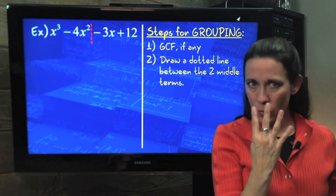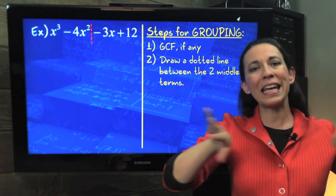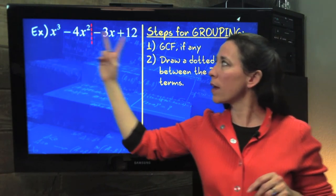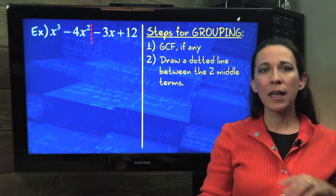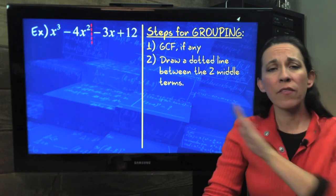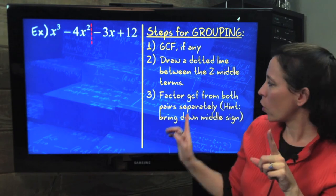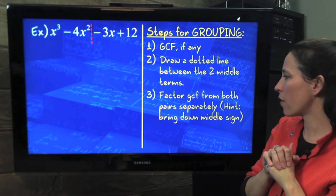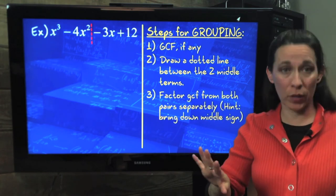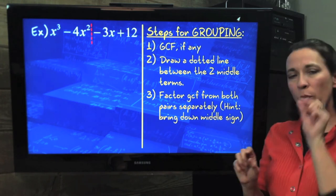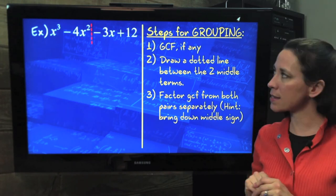And that visually separates the two pairs of terms. Hence, that's why we need 4 for grouping. We group it evenly into two pairs, two here on the left, two here on the right. Now, there was not a GCF among all four terms. However, we're going to factor out a GCF from the pairs separately. And there is a hint, we're going to bring down that middle sign.